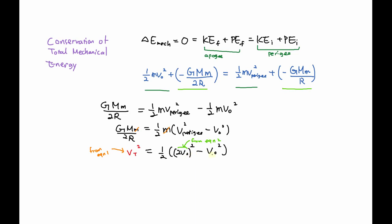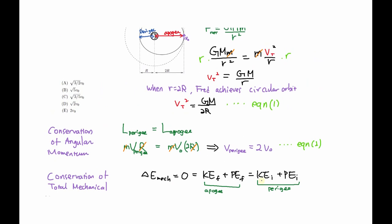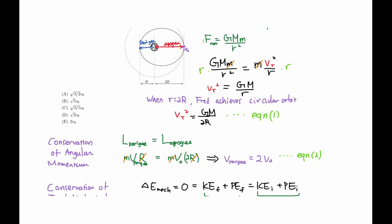Simplifying the right side: one half times (4v₀² minus v₀²) equals one half times 3v₀² equals three v₀² over 2. Taking the square root of both sides gives v_t equals v₀ times the square root of 3 over 2, which matches answer choice A.